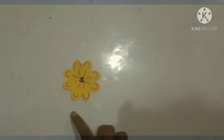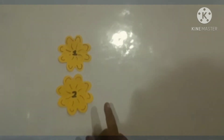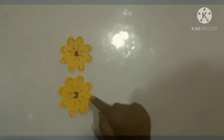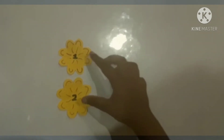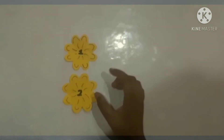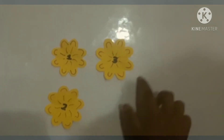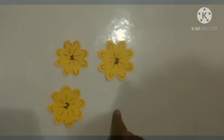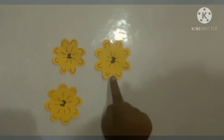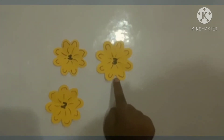1 has no pair, so 1 is an odd number. This is a pair, so 2 is an even number. 3 has no pair, so 3 is an odd number.